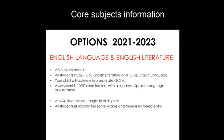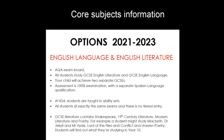At Key Stage 4 at Prince Henry's we teach in ability sets. One of the really attractive features of the English Language and Literature exams is that there are no tiered entries, so any student can achieve any of the grades. Around GCSE English Literature there's a wide choice of texts. Your son or daughter will find out at the very beginning of Year 10. Topics include Shakespeare, 19th century literature, modern literature and poetry — for example, Macbeth, Dr Jekyll and Mr Hyde, Lord of the Flies, Conflict Poetry and Unseen Poetry.